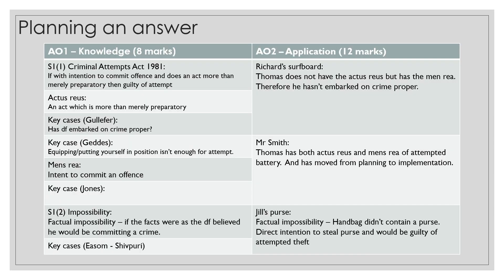For when Thomas throws the rock at Mr Smith, the legal rules you'll apply include the case of Geddes — merely equipping or putting yourself in a position is not enough for an attempt. You also need to describe the mens rea: intent to commit an offence. You can include a second case, Jones. Here you can argue that Thomas has both the actus reus and mens rea of attempted battery and has moved from planning to implementation.